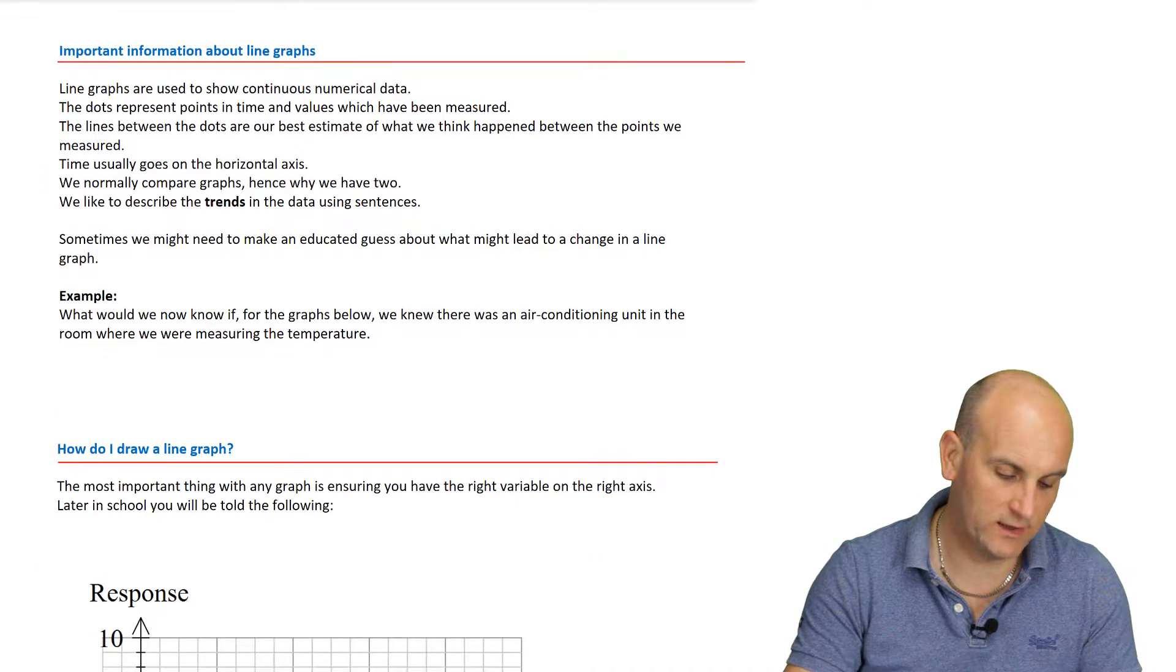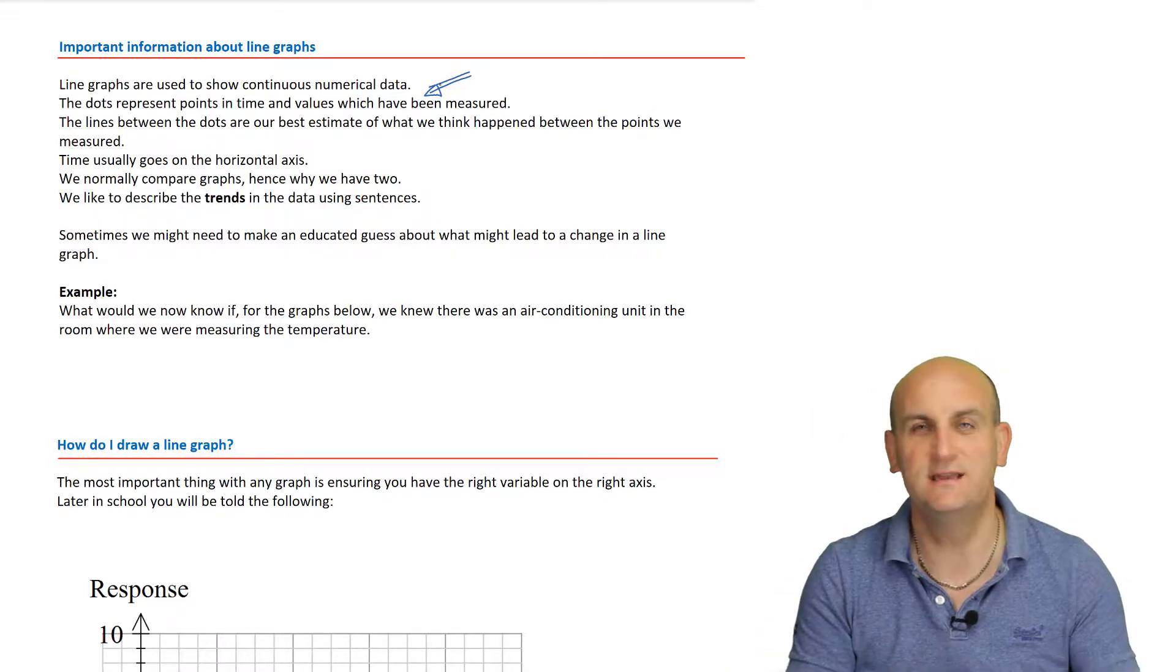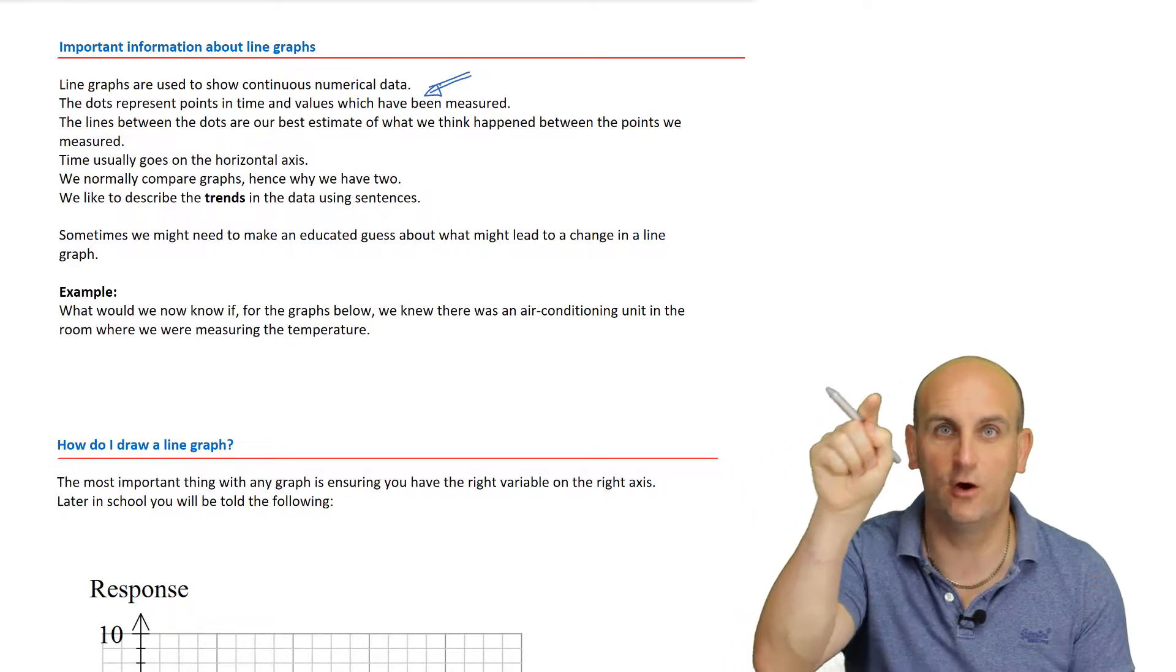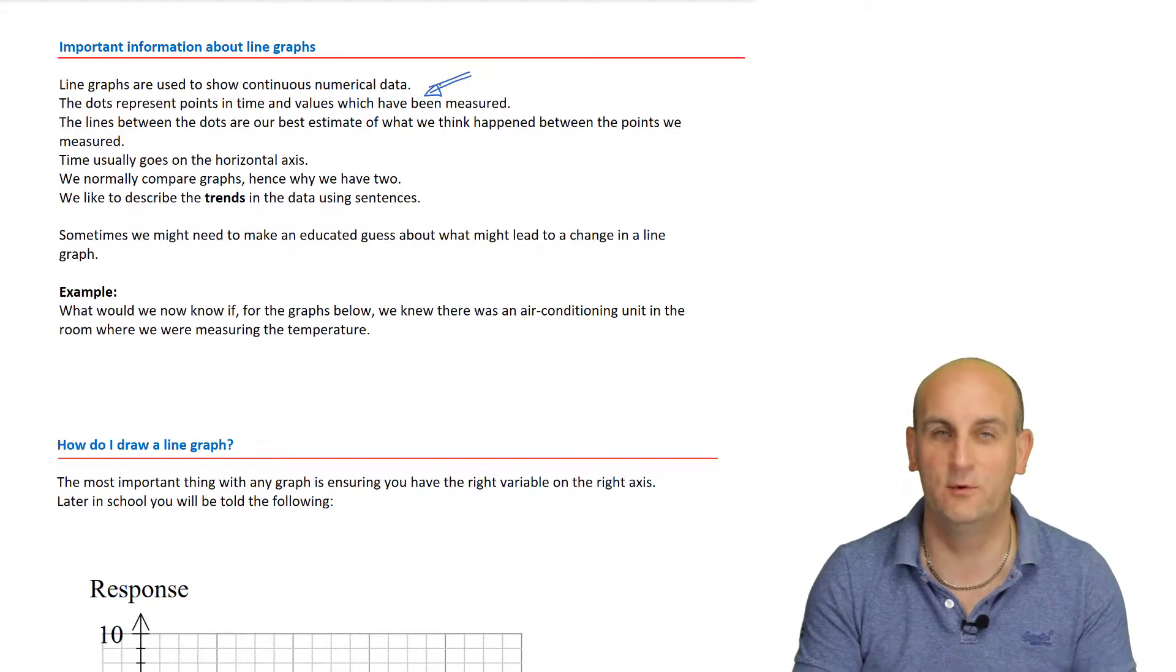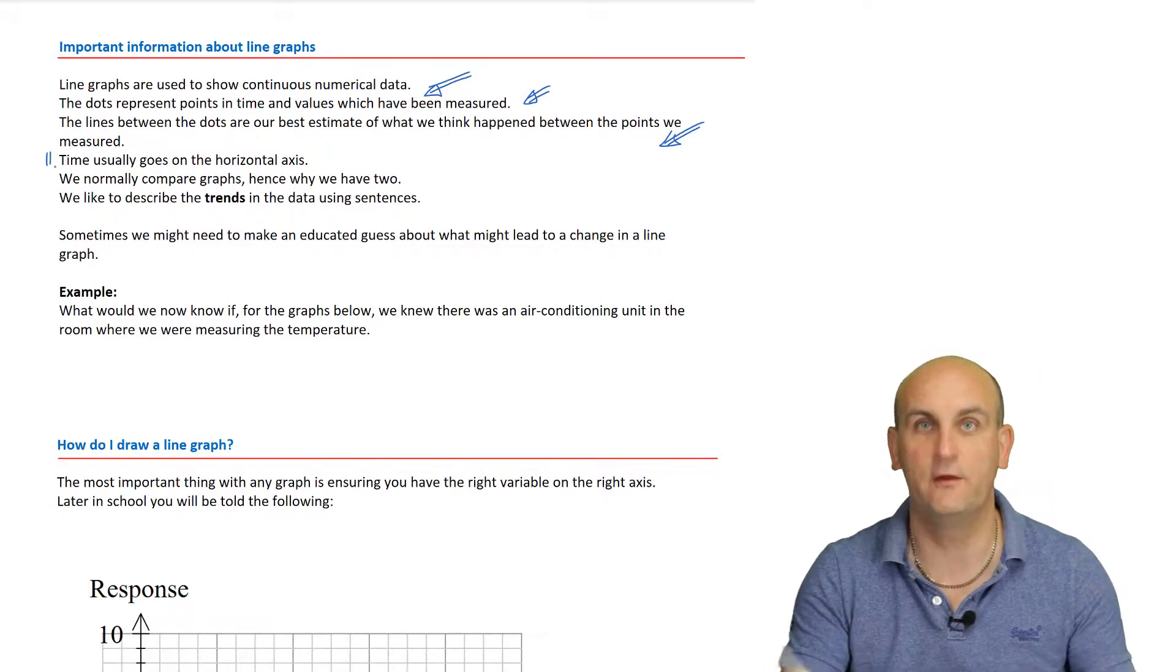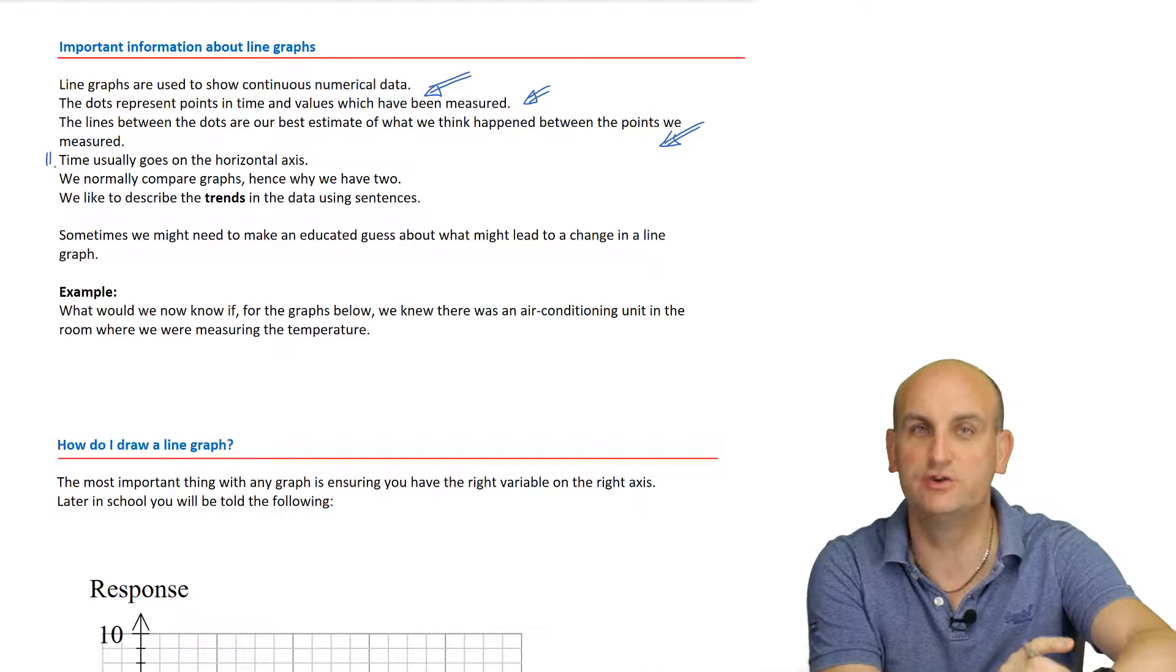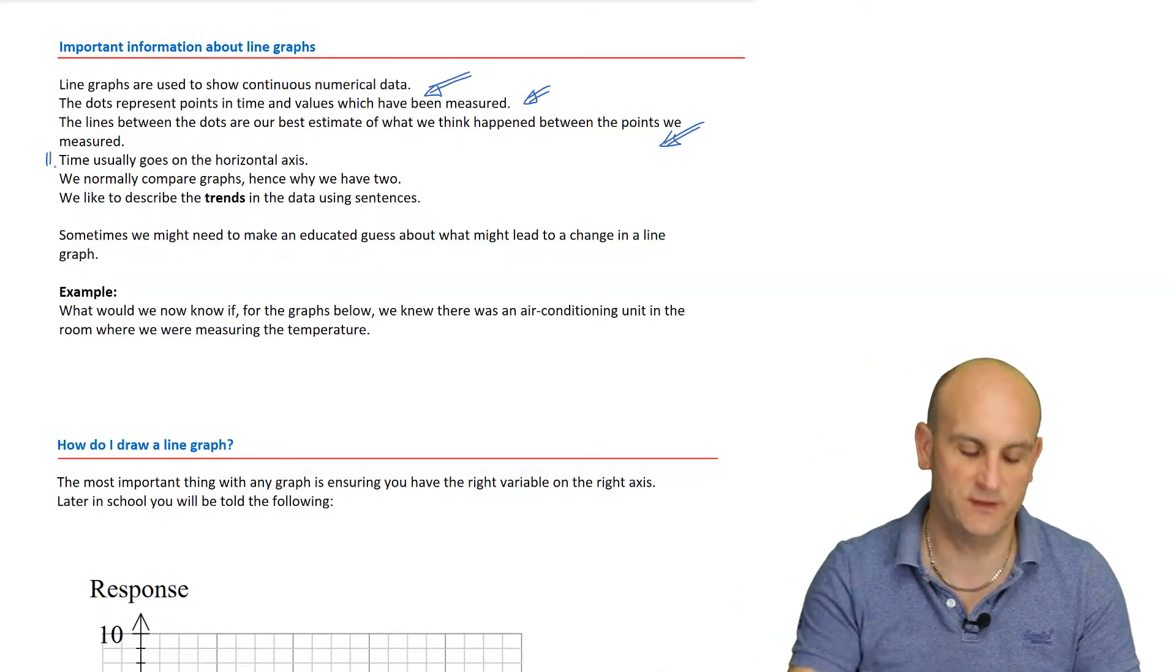Now, what's really important about line graphs is that they show continuous numerical data. That's why we have those red lines, because we know that temperature doesn't just stop. Yes, you walk into a room and it's 20 degrees. Walk in an hour later, it's 25 degrees. It's gradually got warm up. It's gone through all of the different temperatures. It's not like suddenly we just jump a degree. Which is a bit weird, really, because here in Melbourne, literally, we can walk out in the morning, it's 35 degrees. Walk out in the afternoon, it's 20 degrees. So, we measure the dots and we make a best estimate for the stuff with the lines. Now, one of the important things about line graphs is that time normally goes on the horizontal axis, okay? Time is something we can't change.